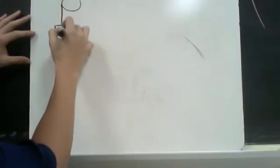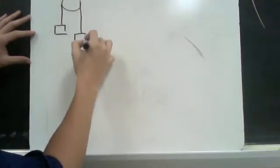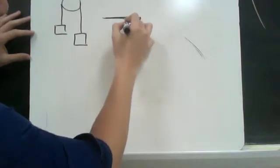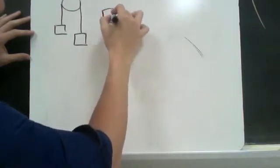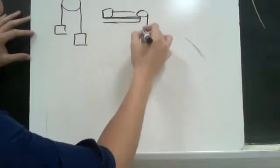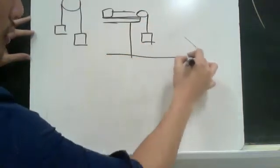One is a pulley system that looks somewhat like this, and another one is a system where we have a mass on a table connected to a pulley and another mass that is hanging off the table, like so.